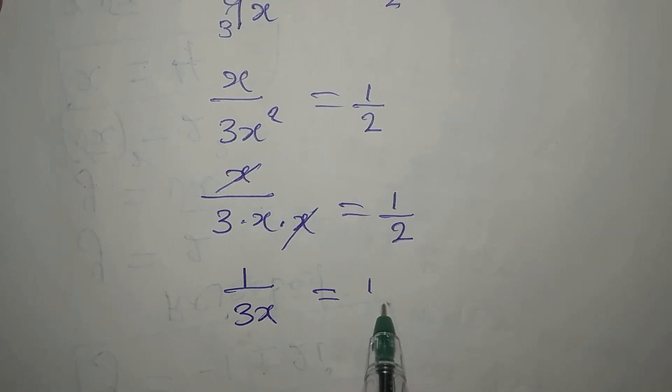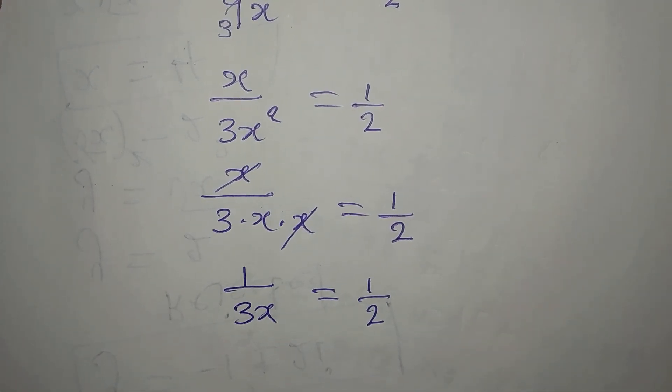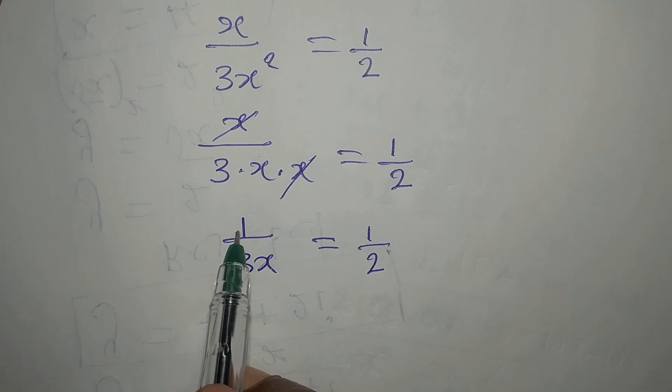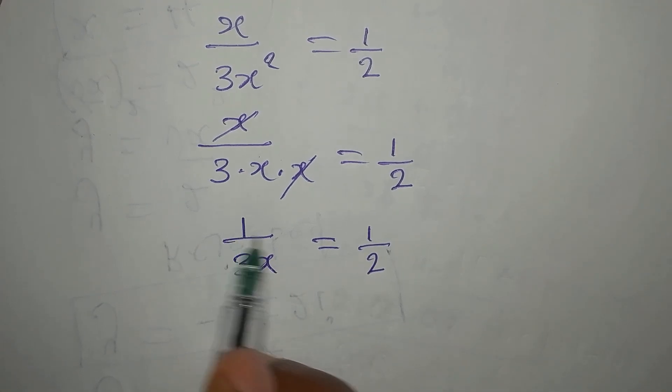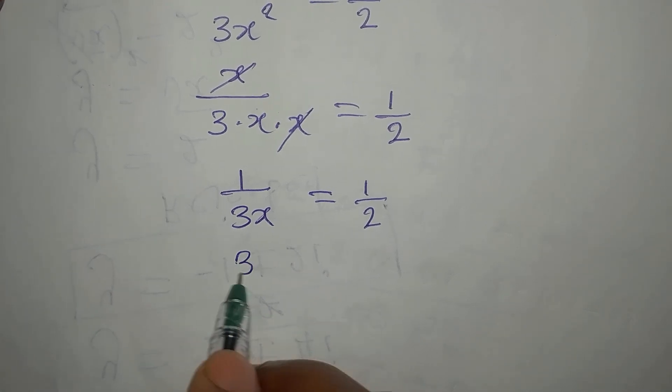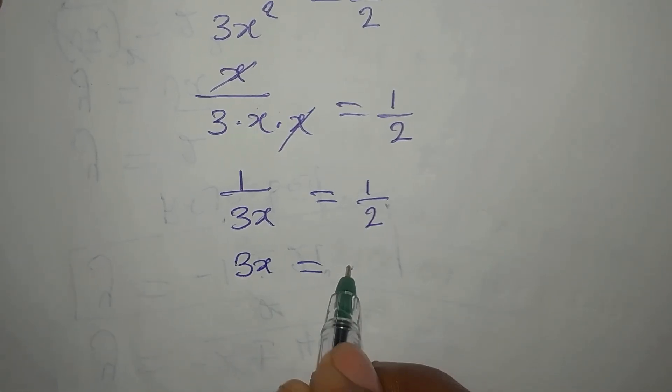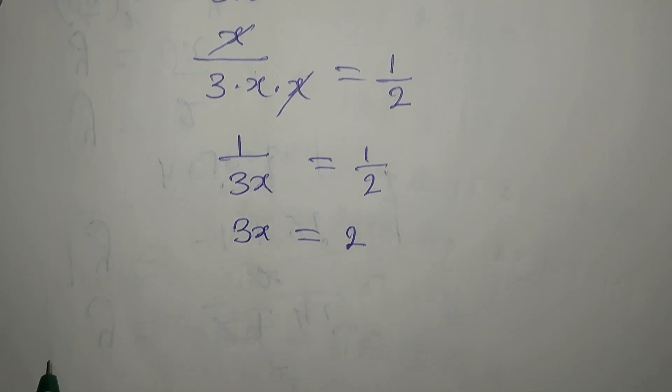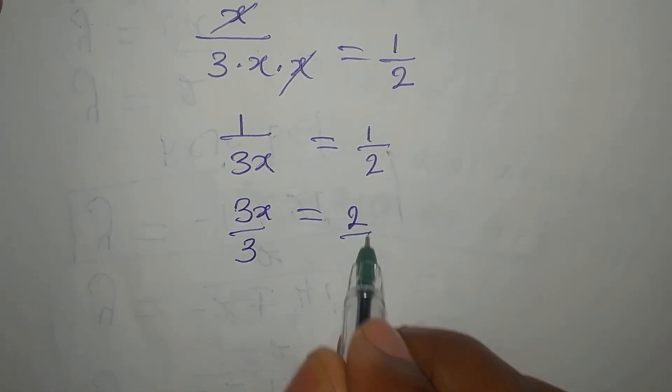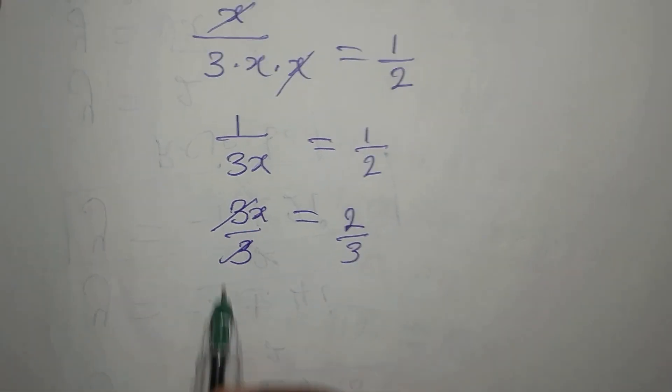If this is the case, what can I do? I can now compare. Since we have 1 on the left hand side and the right hand side, and the numerators on both sides are the same, I can conclude that this 3x should be equal to 2. If that is correct, then divide this by 3. This goes there, and now x equals 2 over 3.